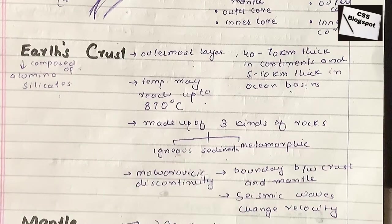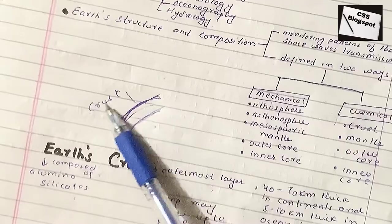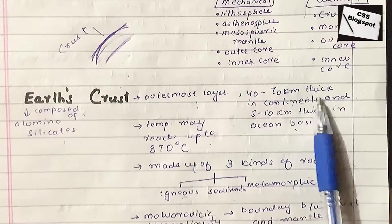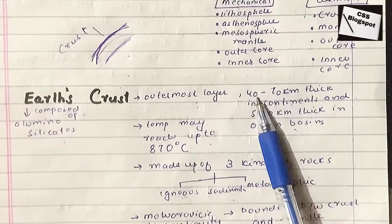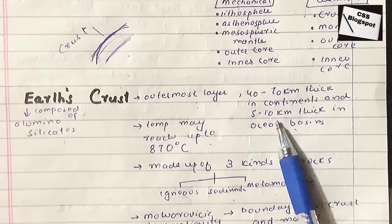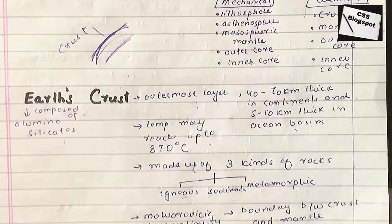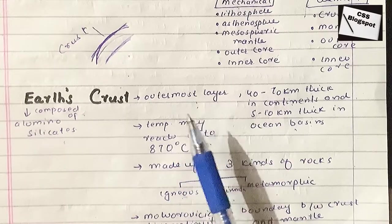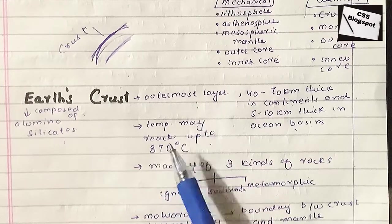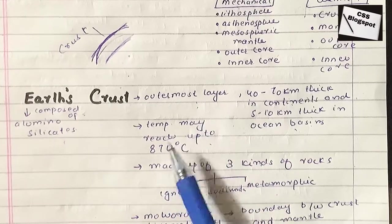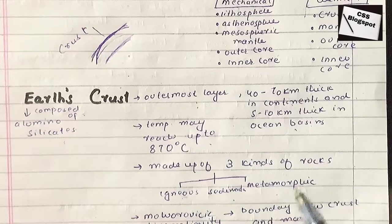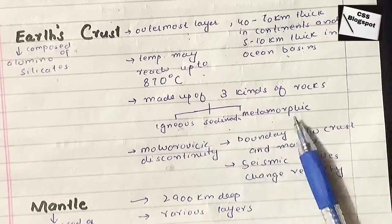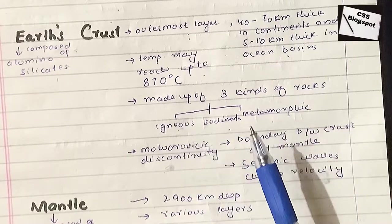Earth's crust is the outermost layer, the earth's boundary. This crust is not constant in thickness. It is 40 to 70 kilometers thick in the continents and 5 to 10 kilometers thick in the ocean basins. Temperature can reach up to 870 degrees Celsius, which is high enough to melt rocks. The crust is made from three kinds of rocks: igneous, sedimentary, and metamorphic.